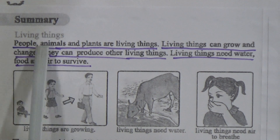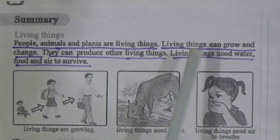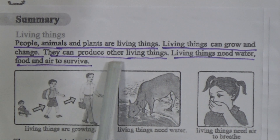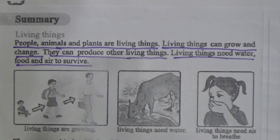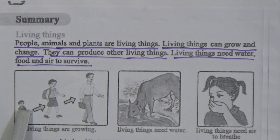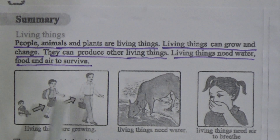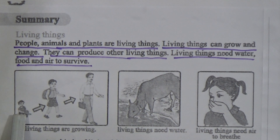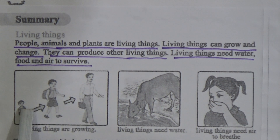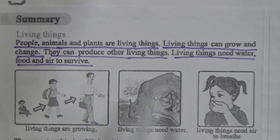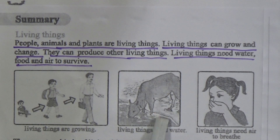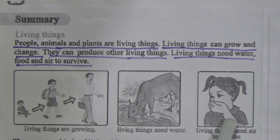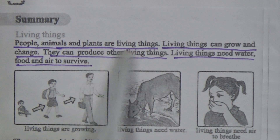People, animals and plants are living things. Living things can grow and change, they can produce other living things, and living things need water, food and air to survive. See this figure - living things are growing: here is a baby, then a boy, and this is a man. That means living things can grow. All living things need water and air to survive and breathe.